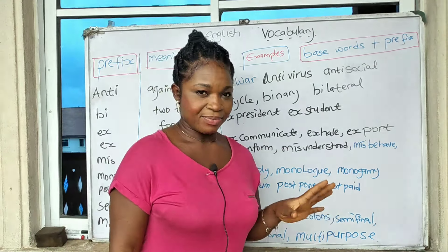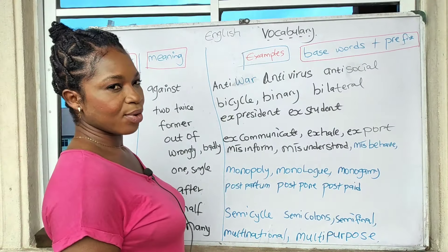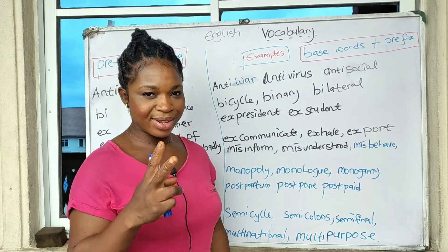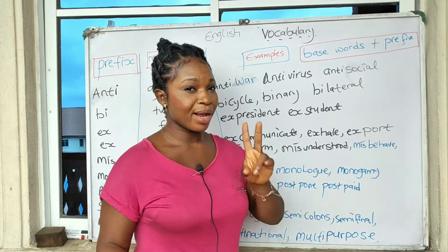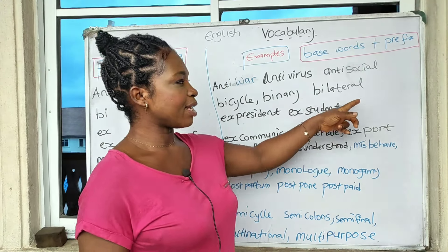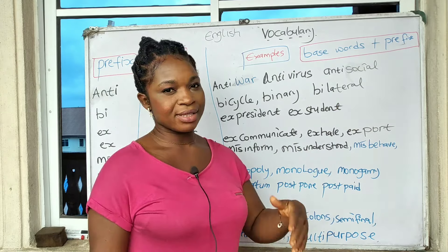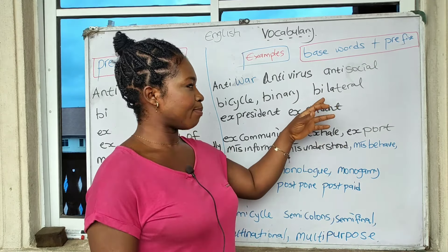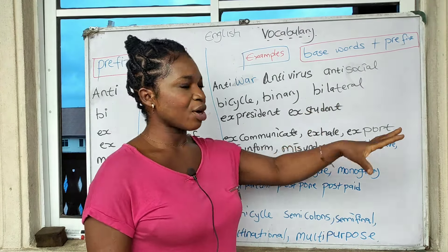'Bi' means two or twice. We have 'bicycle,' which has two wheels. We have 'binary' — two numbers. We have 'bilateral,' meaning two-sided; 'lateral' means sides, and 'bi' means two, so bilateral means two-sided or two parts.